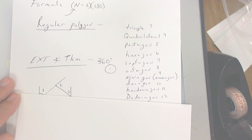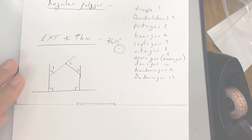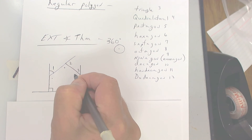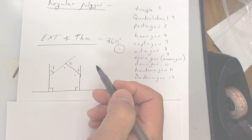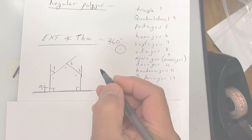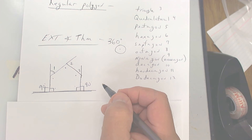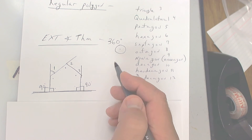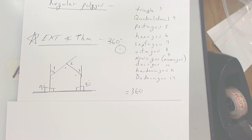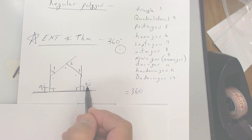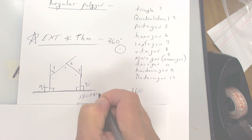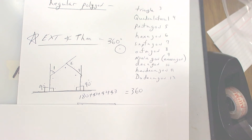The exterior angle theorem says that all exterior angles add up to 360 degrees. Draw this diagram. These are interior angles — we want the exterior, which is on the outside. This line is 180, so if this interior angle is 90, the exterior is also 90. 90 plus 90 is 180. What we're going to do is add up all of these exterior angles and set them equal to 360. So 90 and 90 is 180, plus angle 1, plus angle 2, plus angle 3 equals 360.